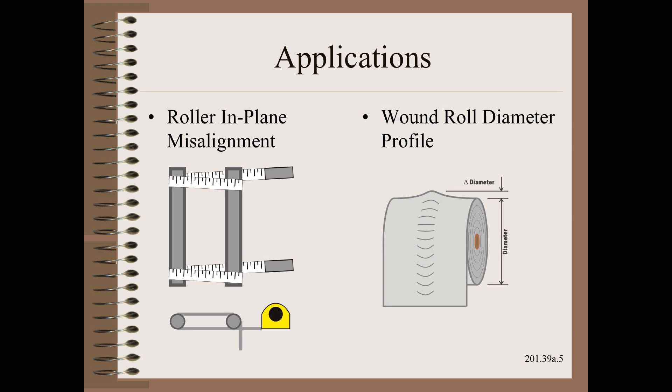The second application is to check for web caliper profile problems by looking at wound roll circumference, as we learned in the winding section of Web 101. Also, as we learned there, always check for repeatability to check your technique.